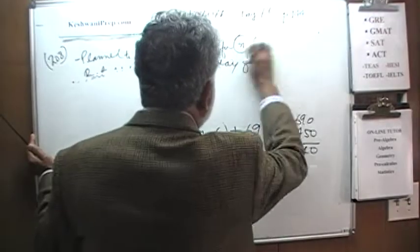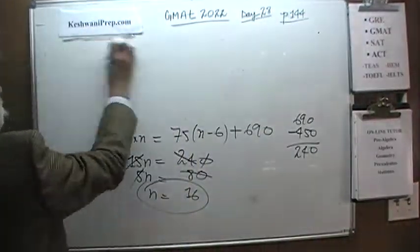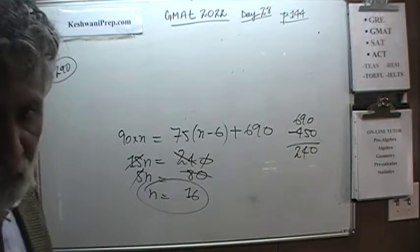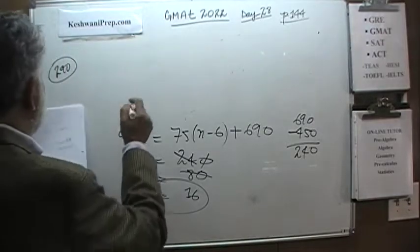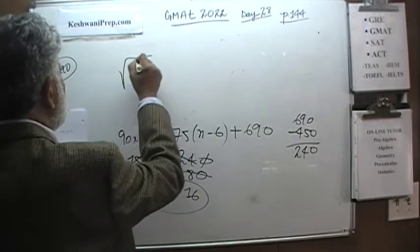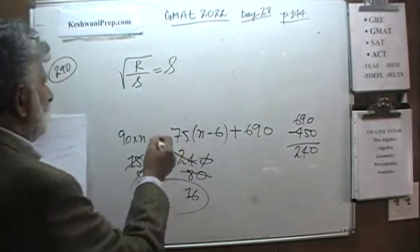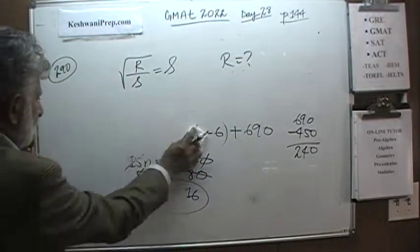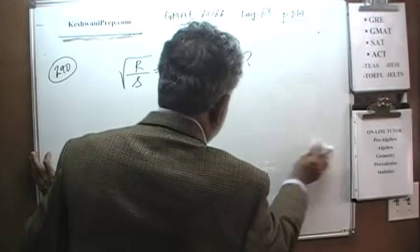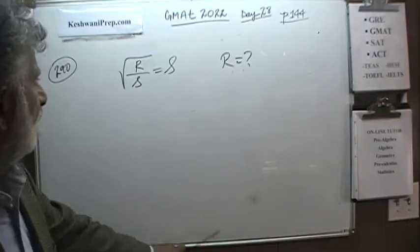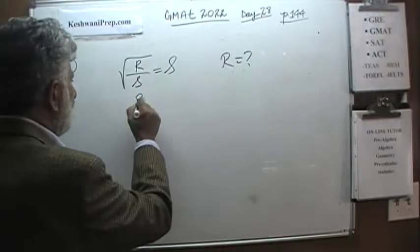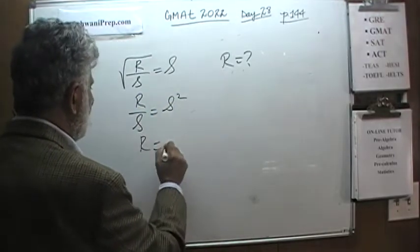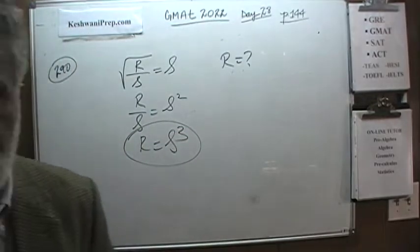Problem 209 is about as simple as it can get on this exam. We are told that √(r/s) = s. Square both sides: r/s = s². Therefore, r = s³. As you can see, it's straightforward.